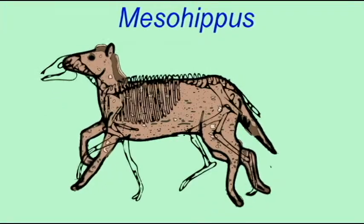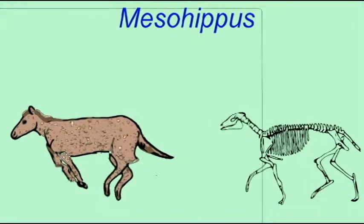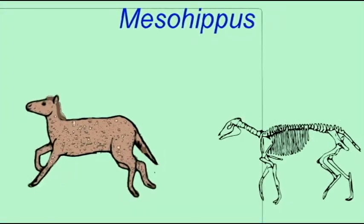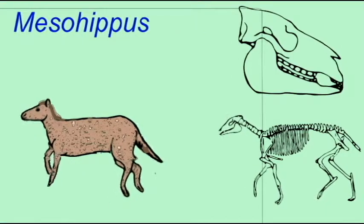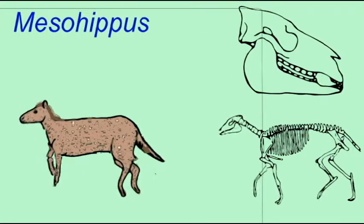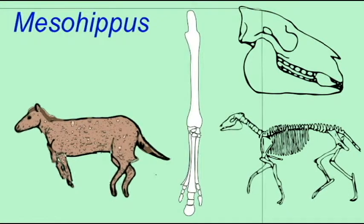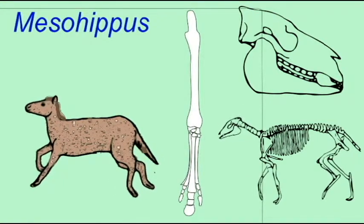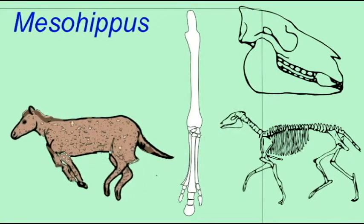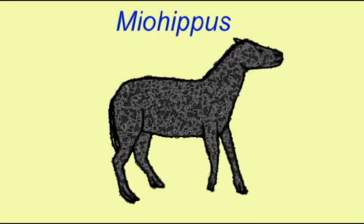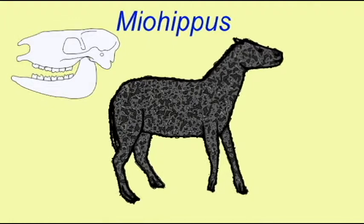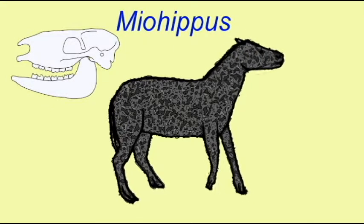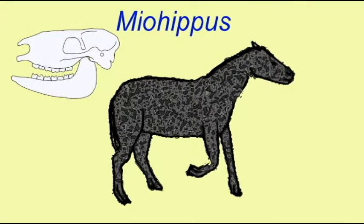Over tens of millions of years, these early simple horses like Hyracotherium, these cat-sized, multi-toed, browsing horses, slowly adapted to these spreading grasslands. They became larger, passing through stages such as Orohippus, Mesohippus, Miohippus, Parahippus, Merychippus. All of these had multiple toes.